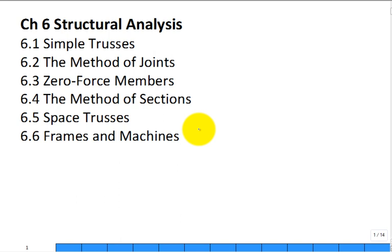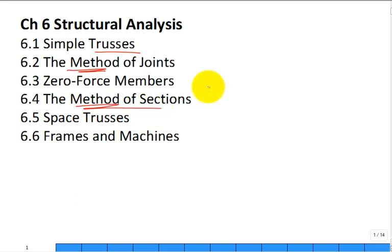We move into this new chapter on structural analysis — probably one of my favorite chapters. When we get to the end, we cover frames and machines, but today we're going to talk about trusses — two-dimensional trusses. There are two methods for analyzing a truss: the method of joints and the method of sections.